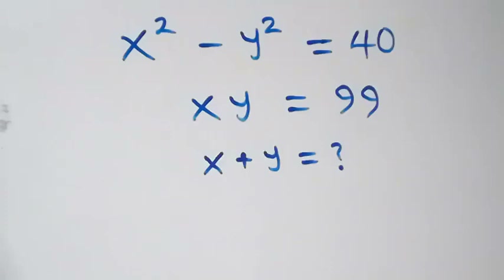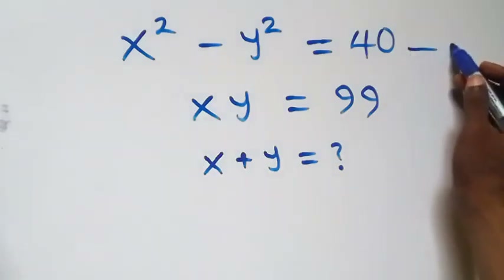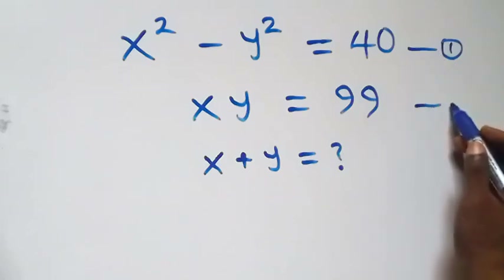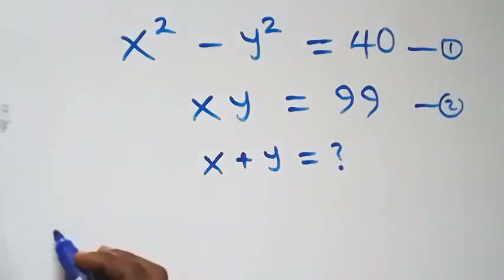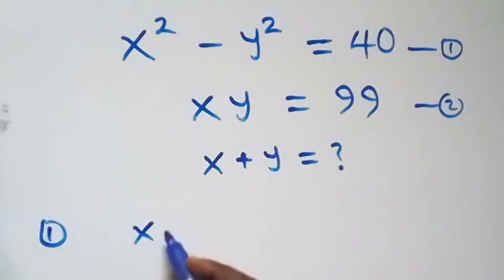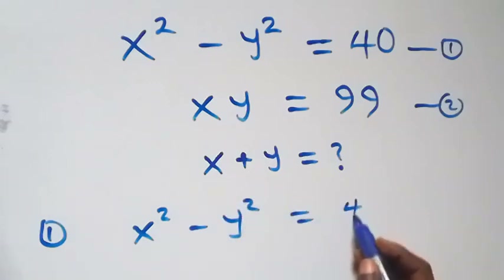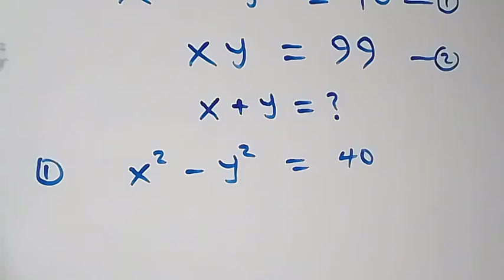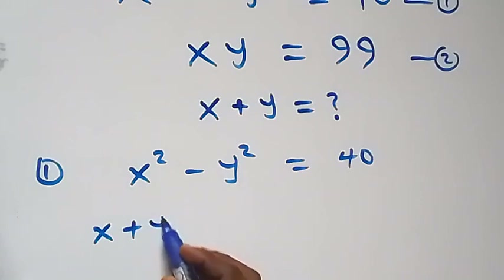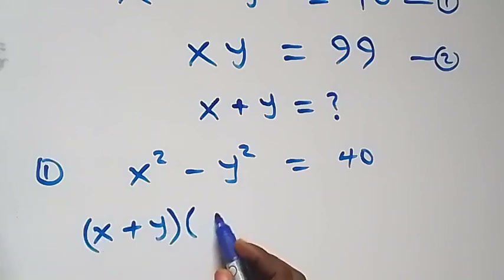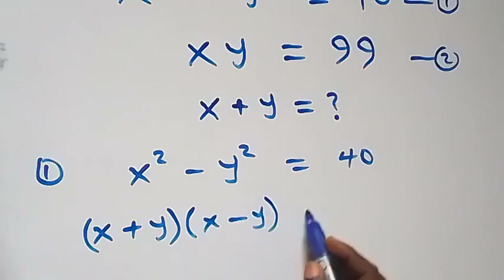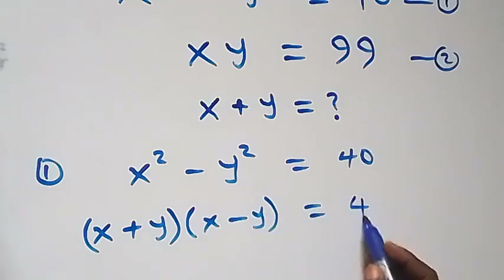Hello, you are welcome. How to find the value of x plus y in this system of equations? Let's label this as equation 1 and this as equation 2. From equation 1 we have x squared minus y squared equals 40, and we can express this as a difference of perfect squares: x plus y multiplied by x minus y equals 40.